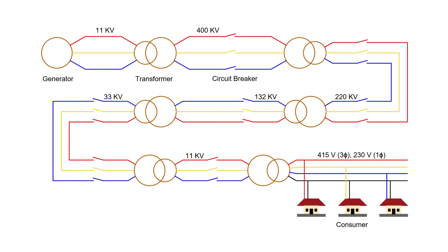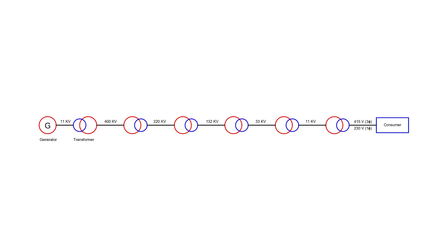In a real-world power system, every component handles three-phase power — R, Y, and B — but drawing all three lines for each section would be unnecessarily complex and cluttered. That's where the single line diagram comes in. It uses just one line to represent the entire three-phase system, along with symbolic notations for key components like generators and transformers. It's simple, clear, and extremely useful for understanding and analyzing power flow from generation to distribution.